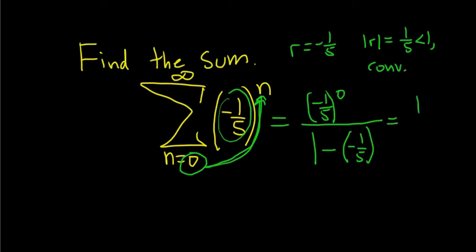Anything to the 0 power is 1. On the bottom, we get 1 plus 1/5. Let's keep going. This is 1 over—we can think of 1 as 5/5, so 5/5 plus 1/5.